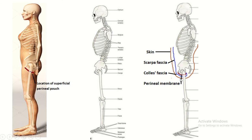The skin covers the whole body, and the part of the superficial fascia of the abdomen known as Scarpa's fascia continues as Colles' fascia in the perineum, down to the inferior border of the perineal membrane. The space between Colles' fascia and the perineal membrane is known as the superficial perineal pouch. It is an open space because this space continues above to the anterior abdominal wall.